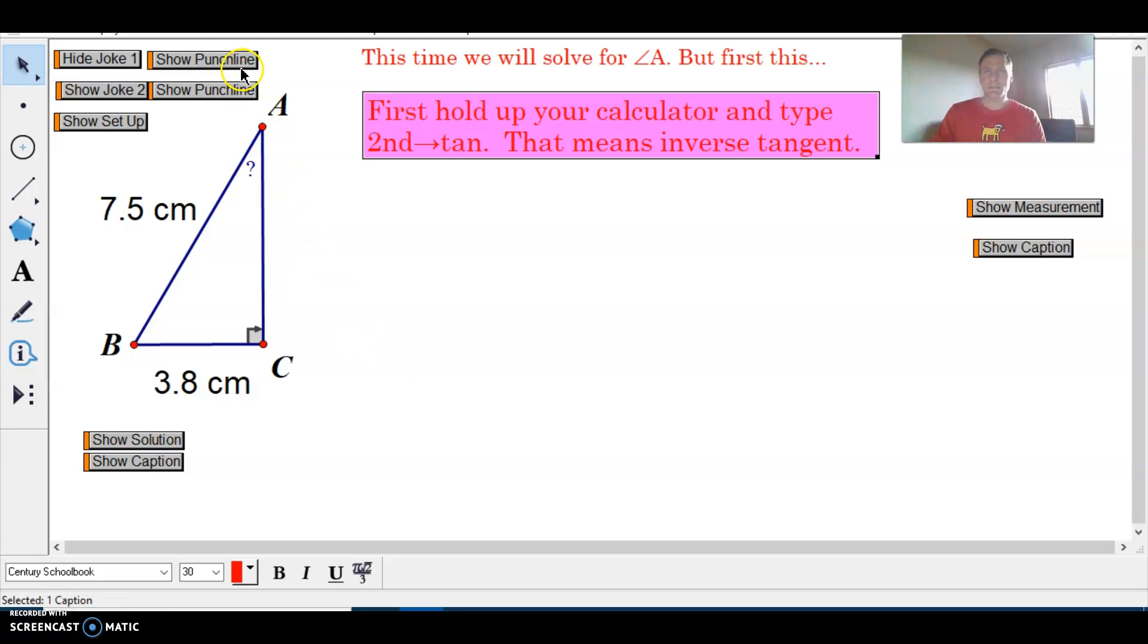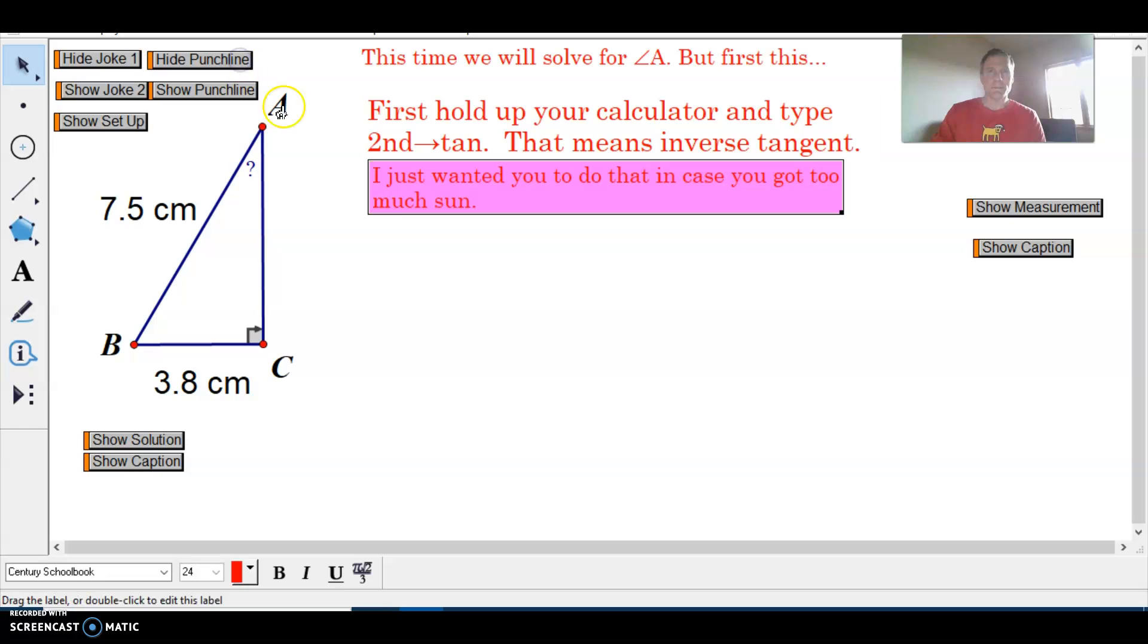All right, because you see, I just didn't want you to end up with a sunburn. So I just wanted you to know how to get an inverse tan in case you got too much sun out there. It is spring. We've had some nice weather. The sun is out more often, getting more intense.